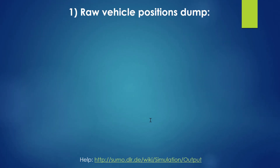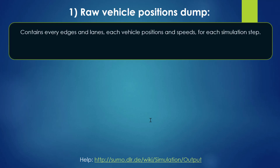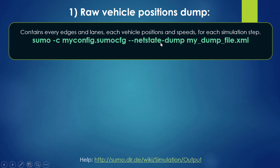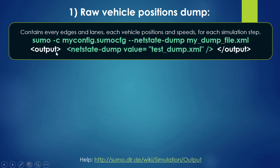The next type of output we can have is the raw vehicle position dump. It contains every edge and lane, each vehicle's position and speed for each simulation step. We can use the next step command to output this dump file, or we can also define that in the configuration file.